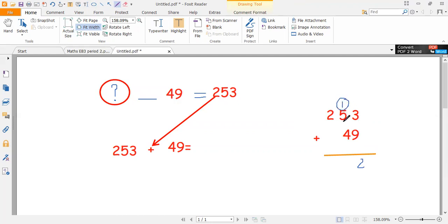Now, one plus five is six. Six plus four is 10. It's a double digit. So we regroup.